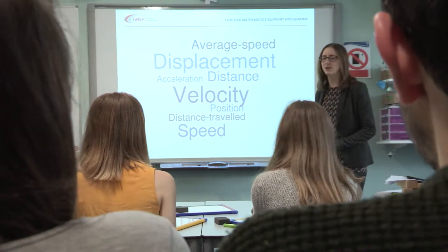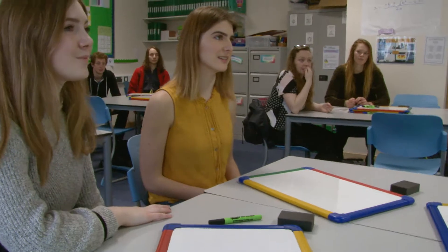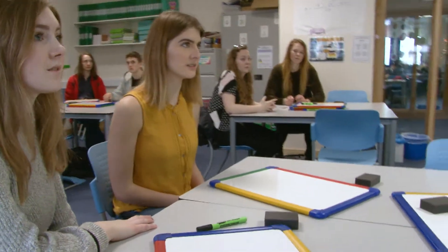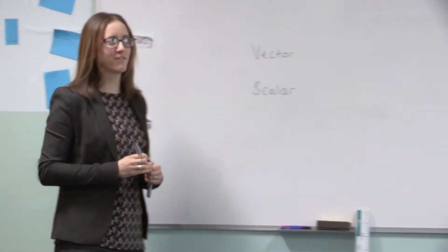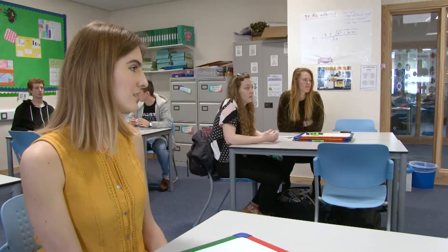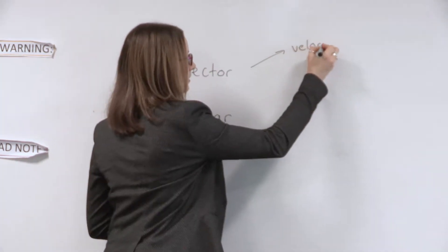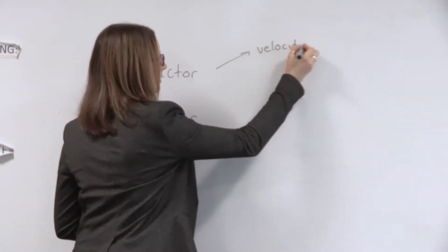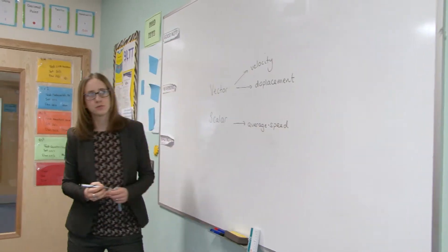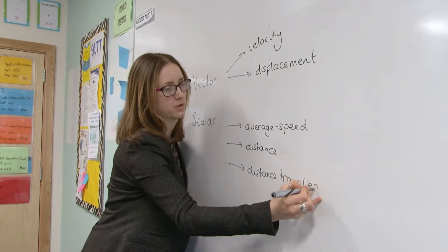Any thoughts on any of these? We were thinking that some of them were vector quantities and some of them were scalar quantities. OK, so which ones are vector and which ones are scalar? I wasn't sure whether the students would immediately tell me which are vectors and scalars, but actually that's how they decided to split the words up, which was helpful for the lesson. For one of the scalars you could have average speed. Distance is scalar, and distance travelled.